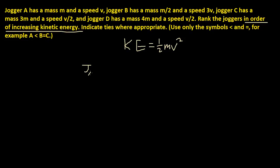So let's look at Jogger A. So Jogger A, 1 half m. Mass is m and v. Speed v squared.